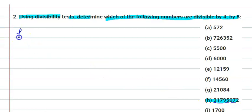First, we will check the divisibility rule by 4, in which if the last two digits are divisible by 4, then we can say that the whole number is divisible by 4.